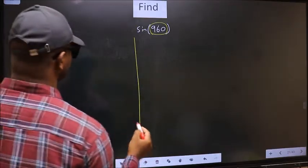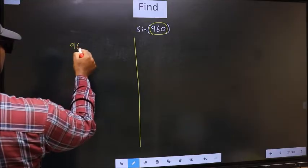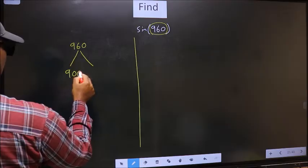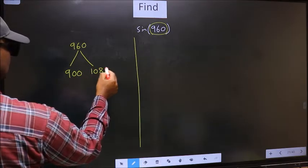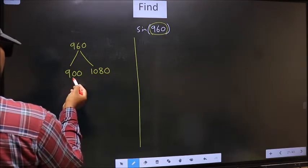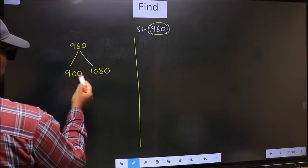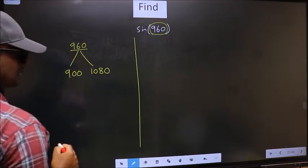What I mean is 960 lies between 900 and 1080. This is 180 times 5 and this is 180 times 6. Between these two numbers, 960 lies.